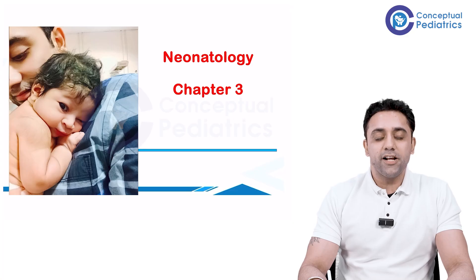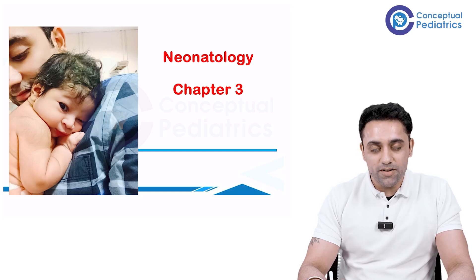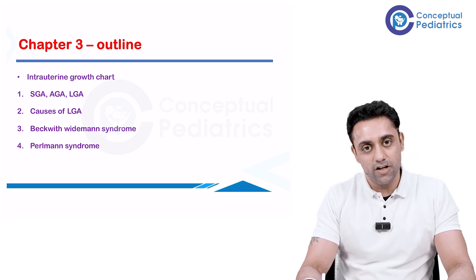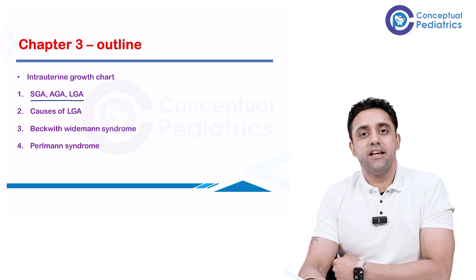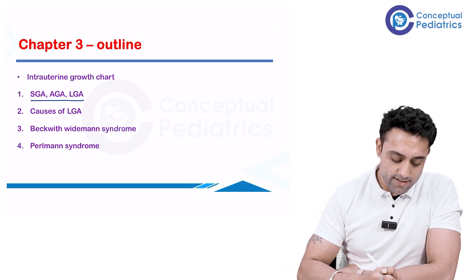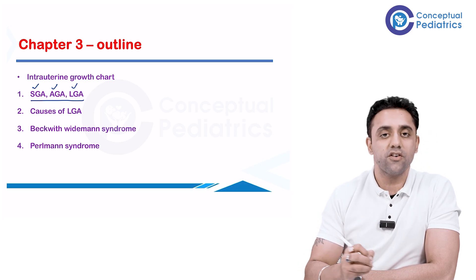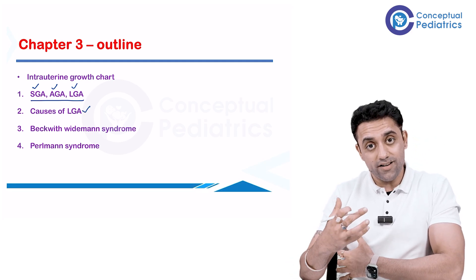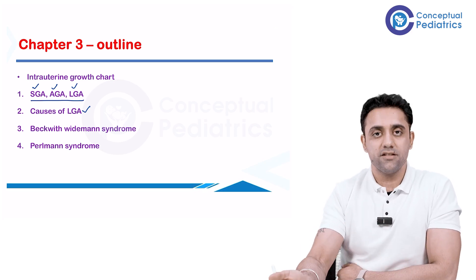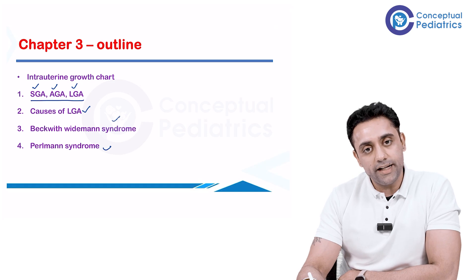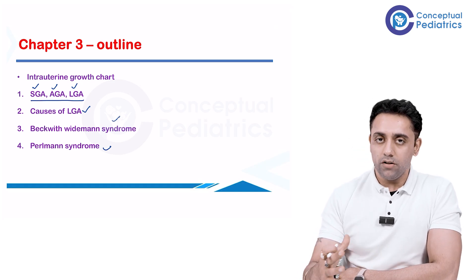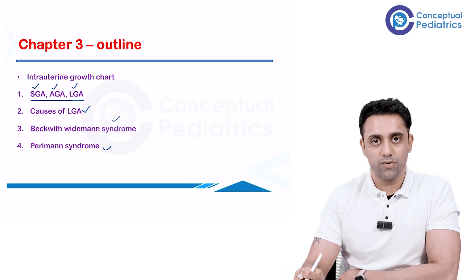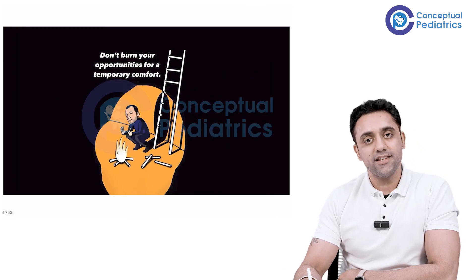Hello everyone, welcome to Pediatrics by Dr. Anand. This is the Neonatology chapter number three. Today's topic is the intrauterine growth chart, and we're going to talk about SGA, AGA, and LGA — small for gestational age, appropriate for gestational age, and large for gestational age. We'll also cover causes of a large baby, including Beckwith-Wiedemann syndrome and Perlman syndrome. A lot of pictures and images will be connected — try to focus on them.